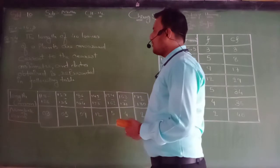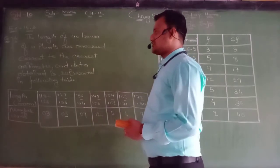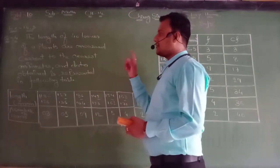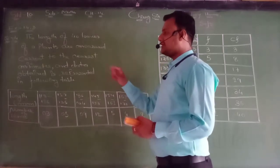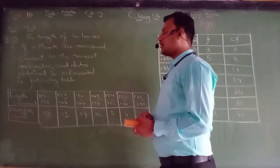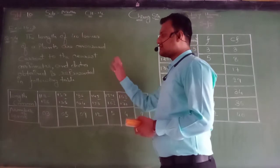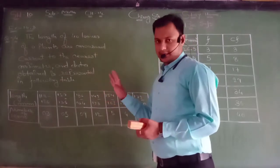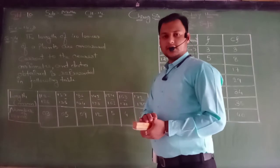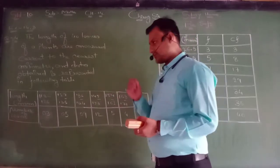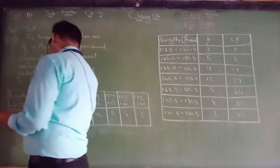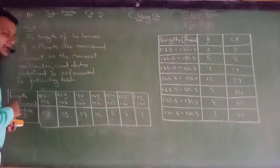The length of 40 leaves of a plant are measured correctly to the nearest millimeter and the data obtained is represented in the following table. You have to find out the median length of the leaves.